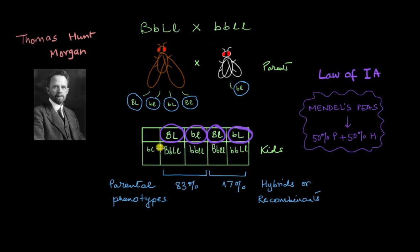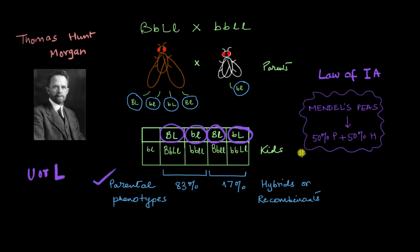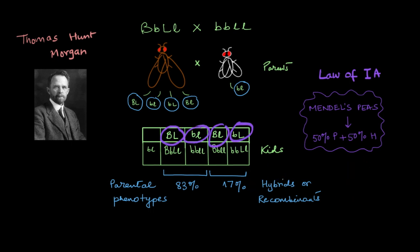These gametes are super important for this video and we'll be referencing them throughout. A very easy trick to remember which gamete is responsible for what is to look at the letter cases. Each gamete is represented by two letters. If both letters are uppercase or both are lowercase, that gamete is responsible for parental phenotypes. If it's a combination of both uppercase and lowercase, then it's a hybrid gamete.